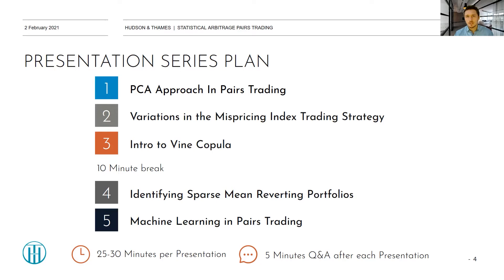The plan for today: first, I'll present the PCA approach in pairs trading. Then Hansen will present variations in the mispricing index trading strategy — an addition to his previous presentation on basic copula strategy — and also an introduction to vine copulas, which is a great concept. After a 10-minute break, Yi Feng will present on identifying sparse mean-reverting portfolios. Finally, Aaron will present on machine learning in pairs trading.